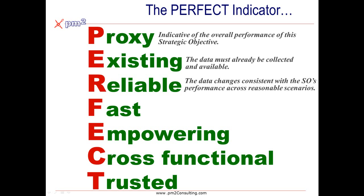The indicator also has to be reliable. As the indicator changes, so should the underlying process. In the example of absenteeism, if employees are unhappy but absenteeism remains the same, then absenteeism is no longer a reliable indicator for that strategic objective.